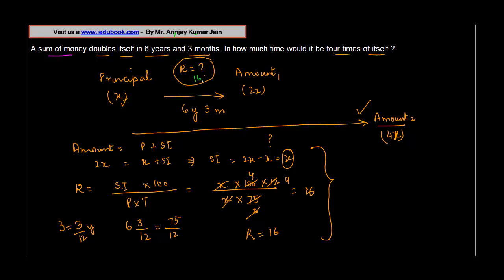Now in problem number two, you need to compute what is the time by which this will become 4x. Again, if amount is equal to principle plus simple interest, my principle is x, amount is 4x, so simple interest is equal to 4x minus x, which is equal to 3x.